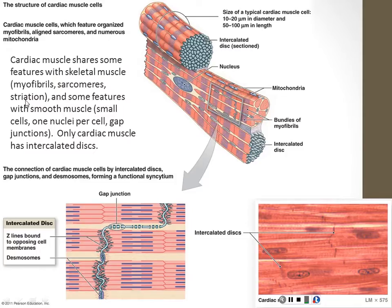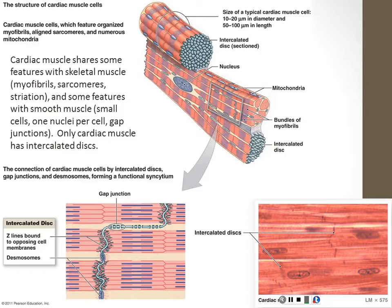That complicated sarcomere structure — with the M line, Z line, thin filaments and thick filaments — the heart has those too. While the myosin and actin are of a slightly different flavor, it's all put together the same way. What you learned about sarcomere shortening in response to calcium, with troponin, tropomyosin, and myosin heads pivoting on actin to make contraction — all those same things happen in the heart. The heart just has its own versions: cardiac myosin, cardiac actin, tropomyosin, troponin. Same function, just a slightly different molecule.